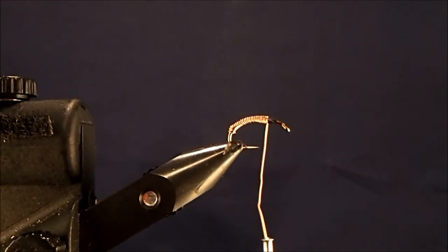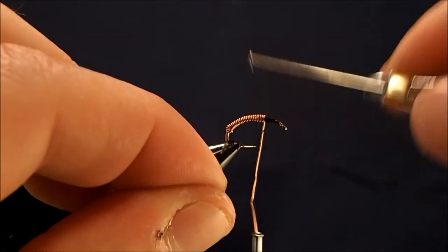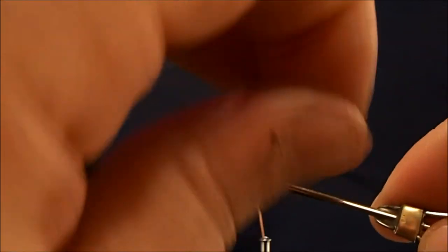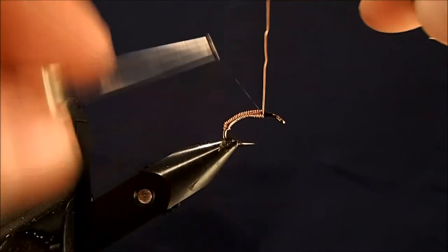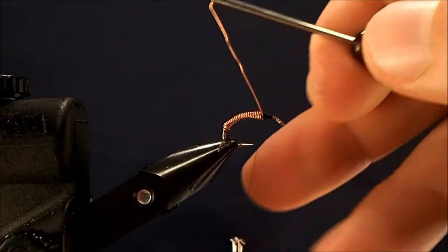And again, one of the nice things about having it on a bobbin—just let it go and it's just going to sit there. When I tie this off, I'll just lift it up, a couple of nice tight wraps.